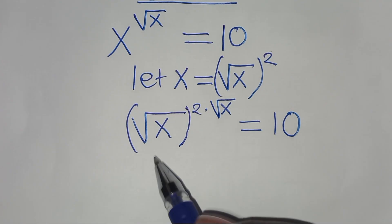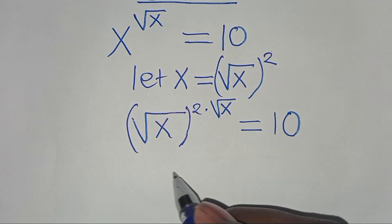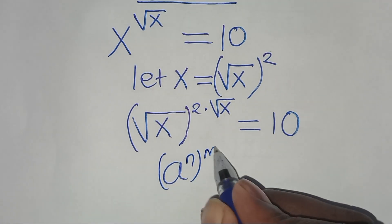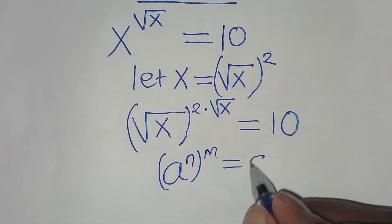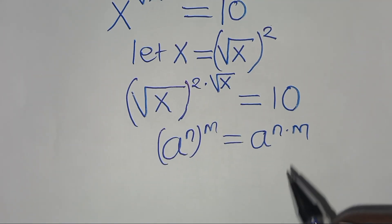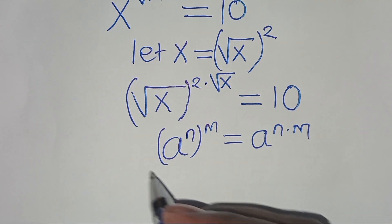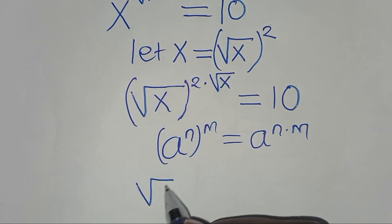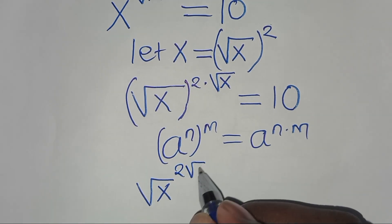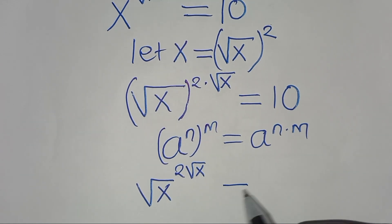The next step is that (√x) raised to the power 2 times √x is in the form of a^n raised to power m, which we can express as a^(n·m). Applying this exponent property, this implies that we have √x raised to power 2√x, this is equal to 10.